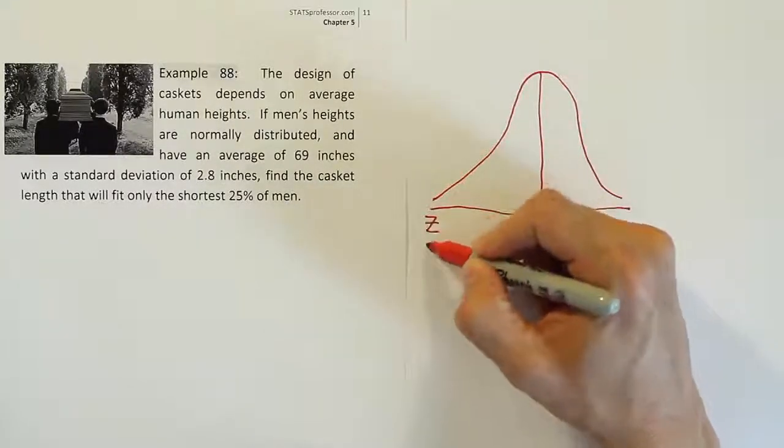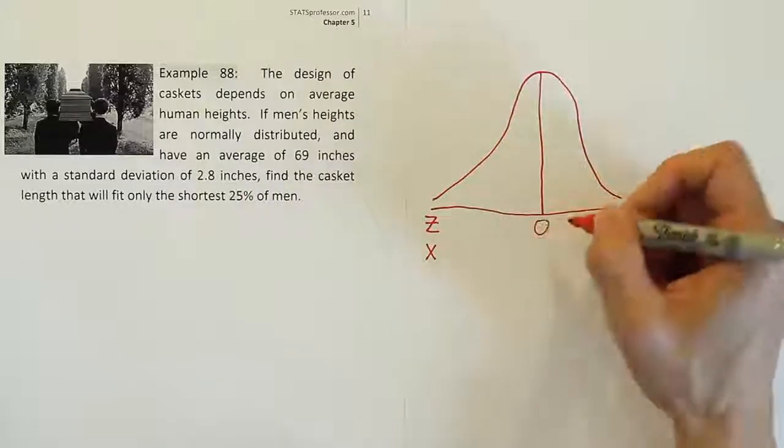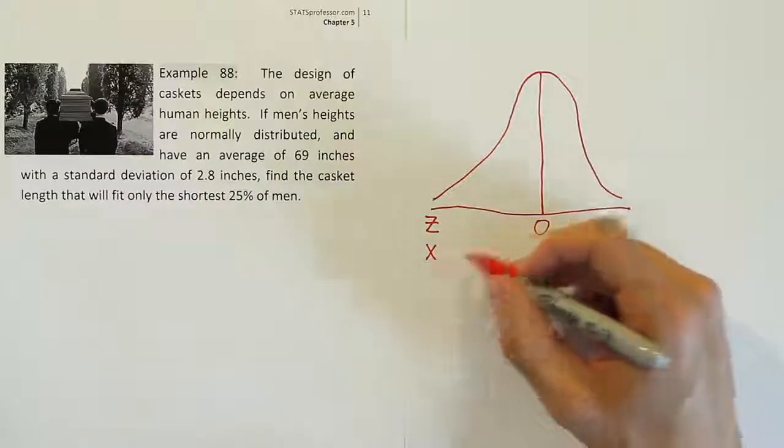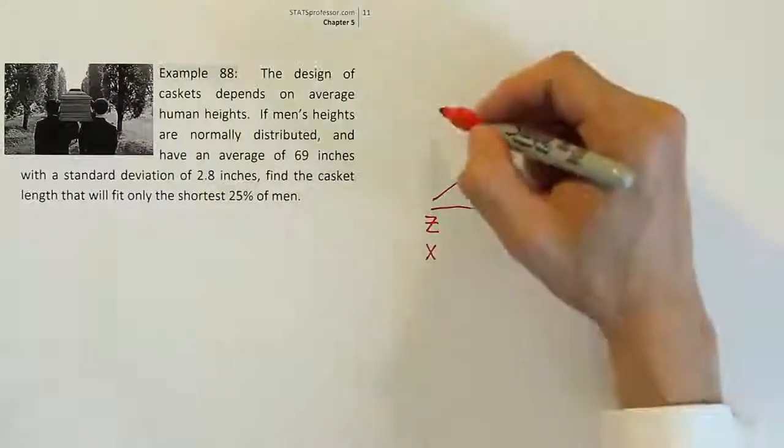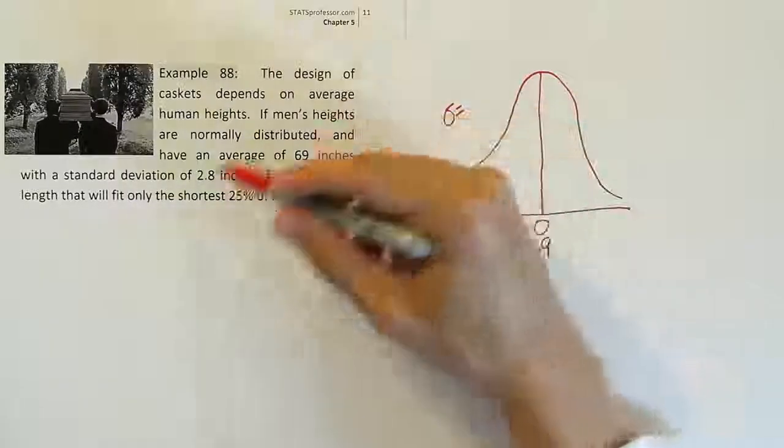And I'll label my z-axis and my x-axis like I normally do. The z is always centered at zero. The x-axis is always centered at the average, which is 69 inches here. And the standard deviation is going to be 2.8.